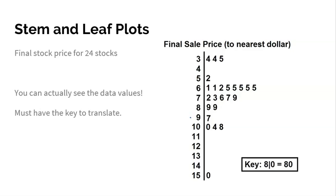The advantage of a stem and leaf plot is that you can actually see the data, which is nice. You do need to be neat — make sure the values stack up evenly without big gaps. The key thing is the numbers must be in order: 1, 1, 2, 5, 5, 5, 5 — they've got to go in order. Looking at the distribution, the smallest stock price was $34, the most expensive was $150, but most stocks ended around $60 to $70.